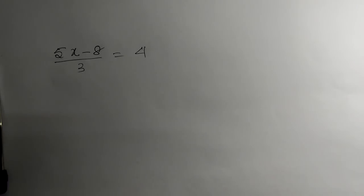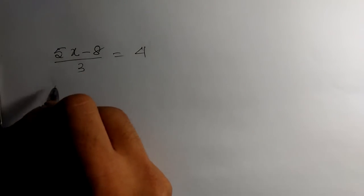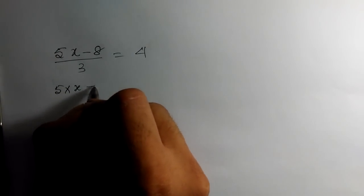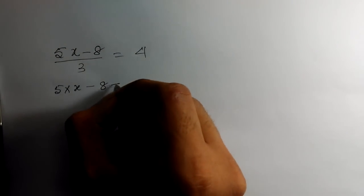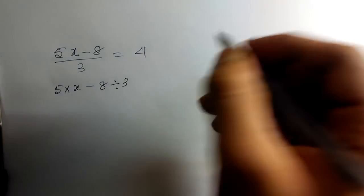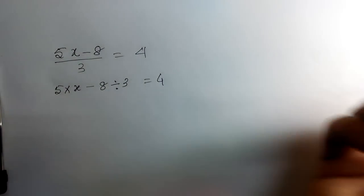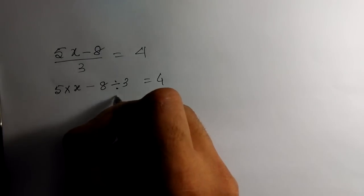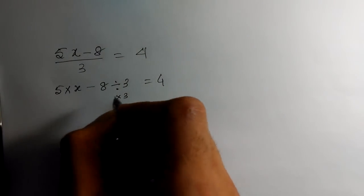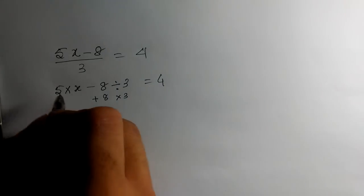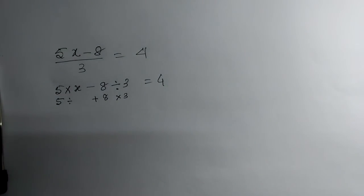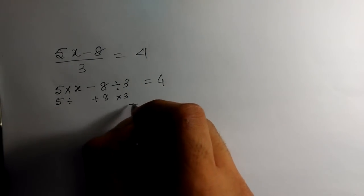We will see the operations involved in the LHS. In LHS we have 5 times x, minus 8, divided by 3, which is equal to 4. What we have to do is reverse every algebraic operation here. So this is multiplied by 3, this is addition of 8, and this is division of 5.